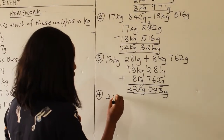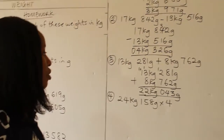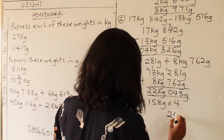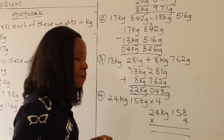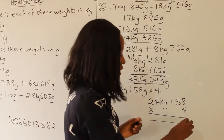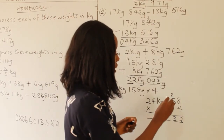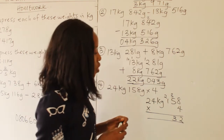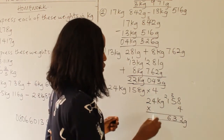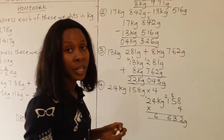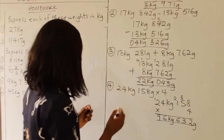Question 4: 24 kg 158 g times 4. Multiplying grams: 4 times 8 is 32 — write 2 carry 3. 4 times 5 is 20 plus 3 is 23 — write 3 carry 2. 4 times 1 is 4 plus 2 is 6. That gives 632 grams. Multiplying kilograms: 4 times 4 is 16 — write 6 carry 1. 4 times 2 is 8 plus 1 is 9. Answer: 96 kg, 632 grams.